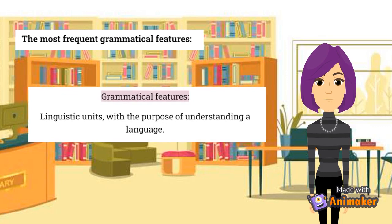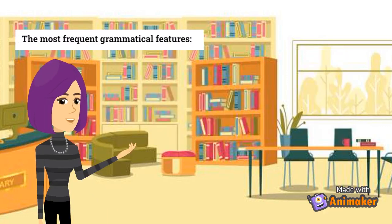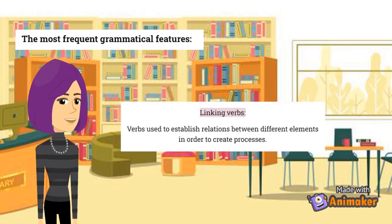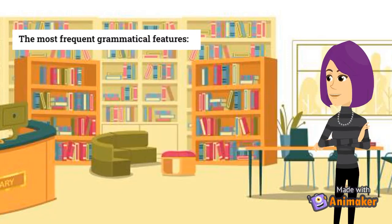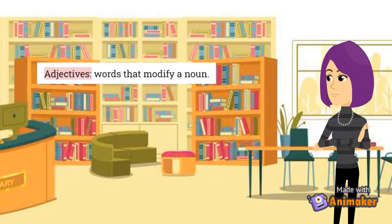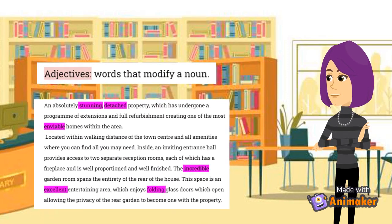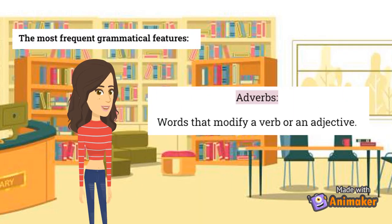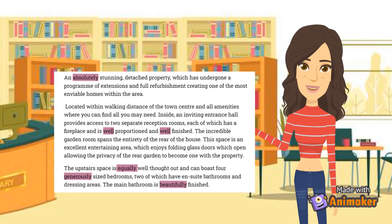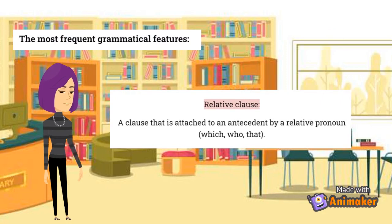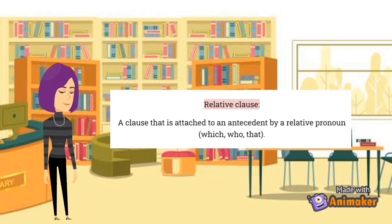Grammatical features are linguistic units such as words, sentences, and utterances, with the purpose of understanding a language. The most frequently used in this descriptive text are linking verbs, which establish relations between different elements in order to create processes. Here we identify the repetition of the linking verb "is." Another grammatical feature present in the text are adjectives, which modify a noun — examples include "stunning," "detached," and "incredible." Adverbs are also included, modifying a verb or an adjective — such as "absolutely," "equally," "generously," and "beautifully." Another grammatical feature present is a relative clause, even though it is not the most frequent.